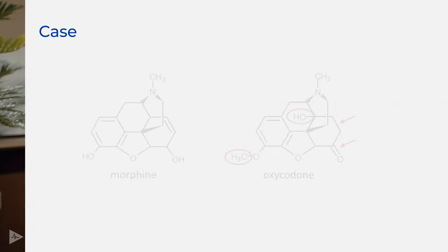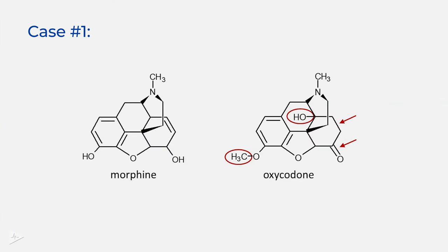Therefore, its ability to detect other opiates — like codeine, hydrocodone, hydromorphone, etc. — really depends on the antibody specificity. Each manufacturer, when they make their kits, are very different one from another. Here we have an example of morphine on one side and oxycodone on the other. You can see they look very similar to each other, but in reality they're actually quite different. I've highlighted the differences between oxycodone and morphine. These antibodies have very exquisite specificity and are very good at telling the difference between these molecules.